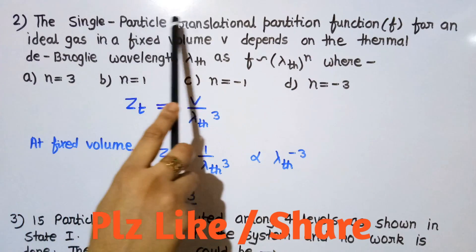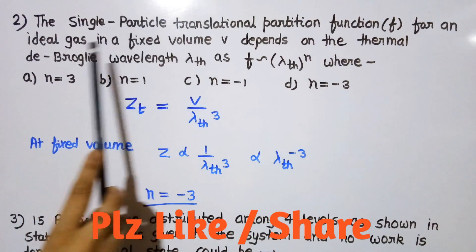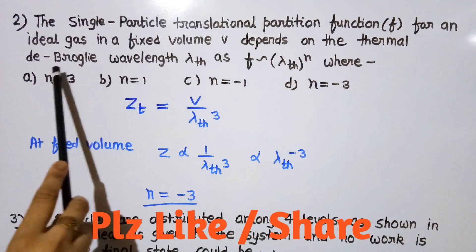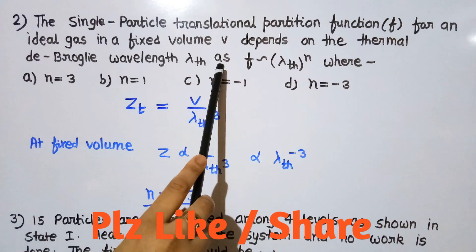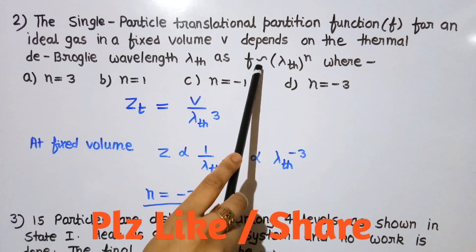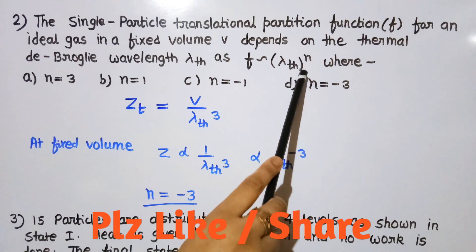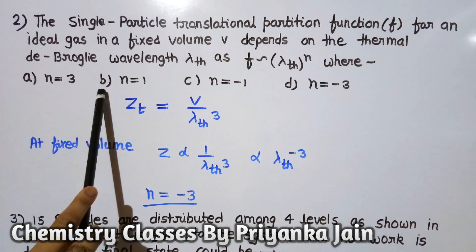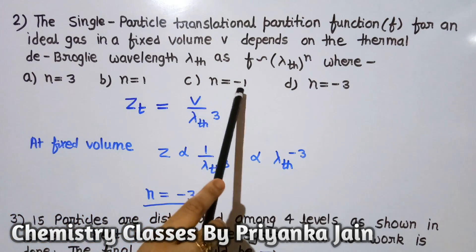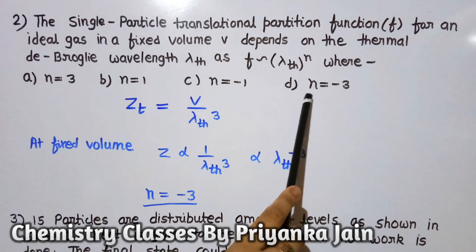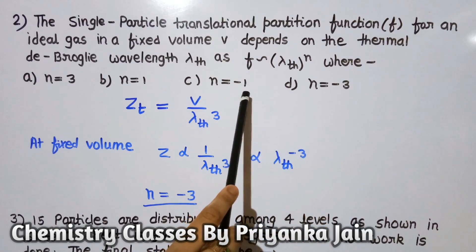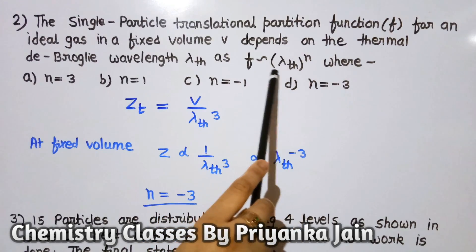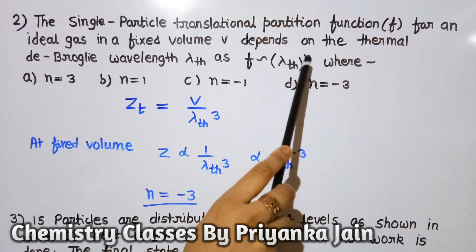The second question asks: the single-particle translational partition function f for an ideal gas in a fixed volume V depends on the thermal de Broglie wavelength λ as f ≈ λ^n. The options are: option A n = 3, option B n = 1, option C n = −1, and option D n = −3. We need to find the value of n.